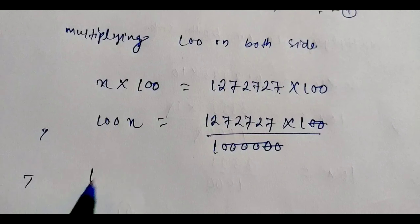Now subtracting equation one from equation two. Equation two is 100x = 127.2727... and equation one is x = 1.2727... Subtracting: 100x minus x equals 127.2727 minus 1.2727. The repeating decimals cancel out — 7 minus 7 is zero, 2 minus 2 is zero — leaving 99x equals 126.